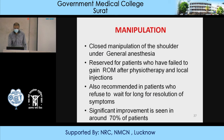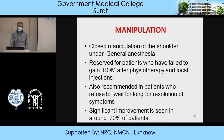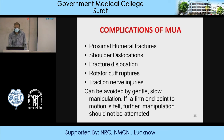Manipulation: closed manipulation of the shoulder under general anesthesia is reserved for patients who have failed to gain range of movement after physiotherapy and local injection, or for patients who refuse to wait for resolution of symptoms. Significant improvement is seen in around 70% of patients. However, manipulation must be done very carefully — it can lead to fracture of the shoulder and should only be done under general anesthesia in the operating theater, never at home or in OPD. Complications include shoulder dislocation, rotator cuff ruptures, and traction injury.